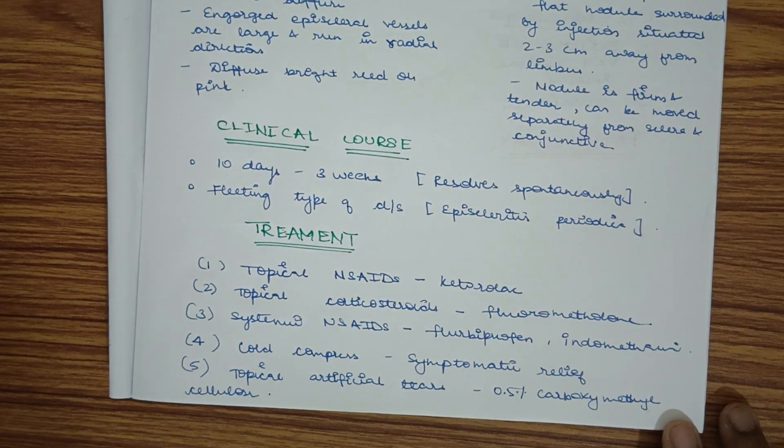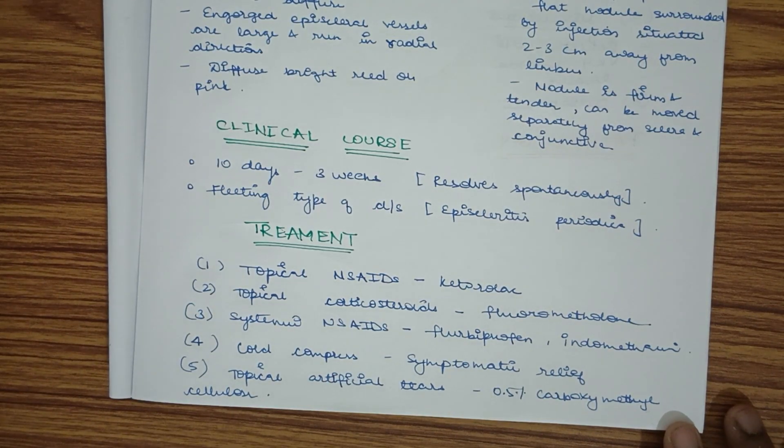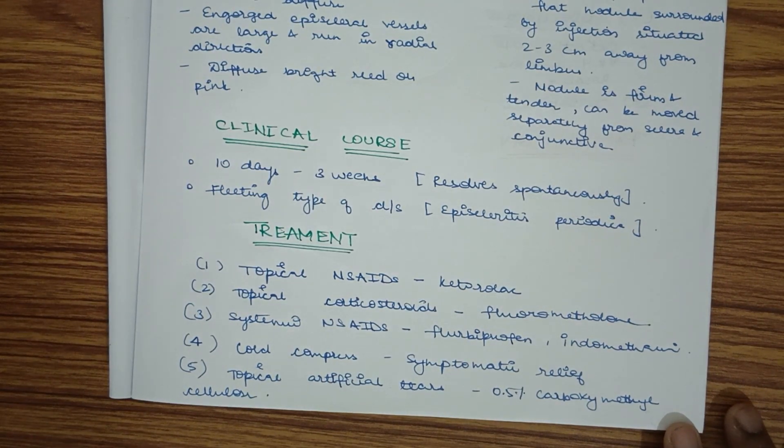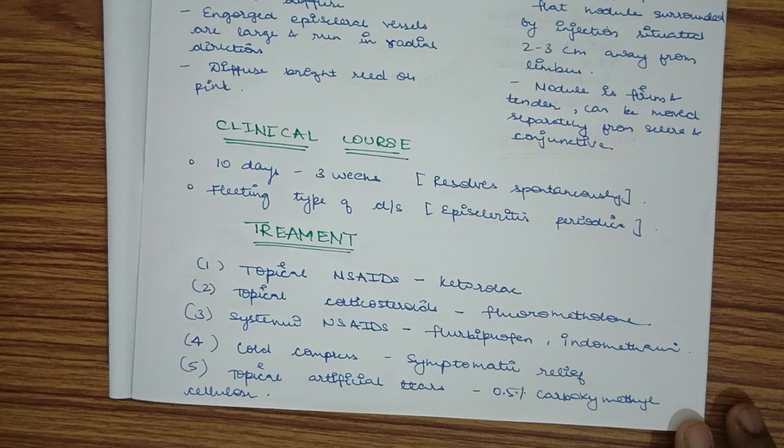Topical NSAIDs include ketorolac. Topical corticosteroids include fluorometholone. Systemic NSAIDs include flurbiprofen or indomethacin. Cold compress provides symptomatic relief, and topical artificial tears include 0.5% carboxymethyl cellulose.